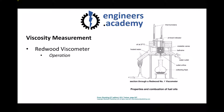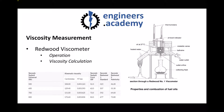Once again we get a time in seconds which relates directly to the viscosity of the fluid. Once we have that time, we can use Redwood conversion tables to determine kinematic viscosity. In the conversion table we have Redwood one seconds and Redwood two seconds — the time in seconds for 50 millilitres to flow through the orifice translates directly into kinematic viscosity in centistokes, which is the same as millimetres squared per second.